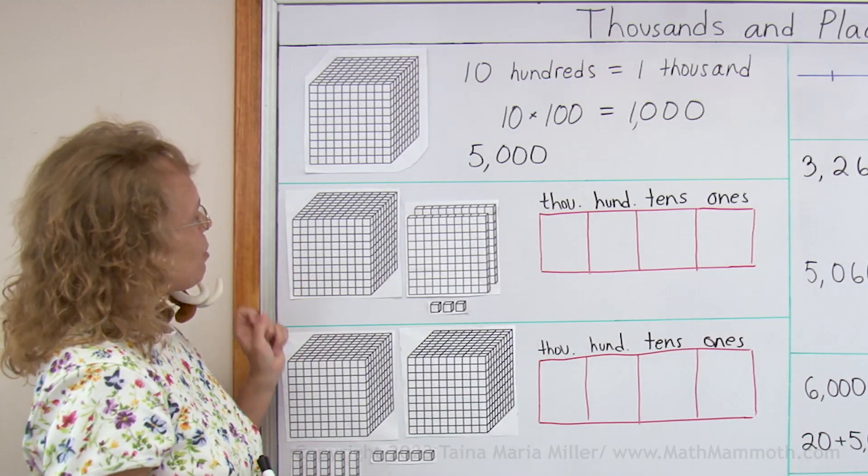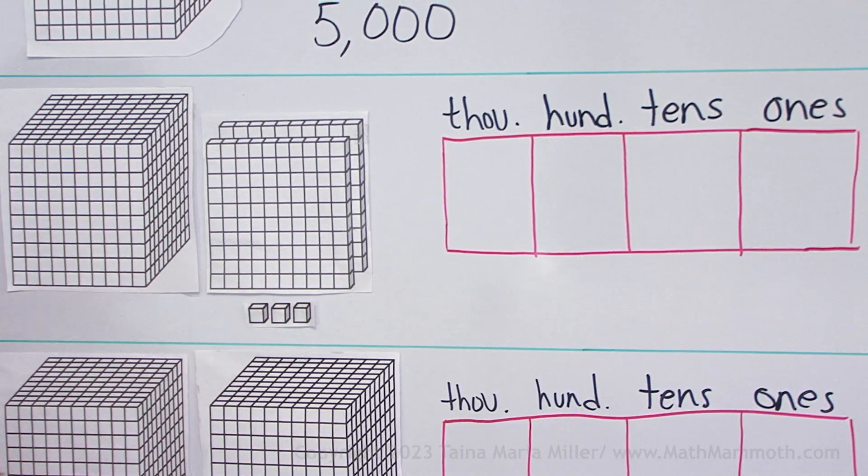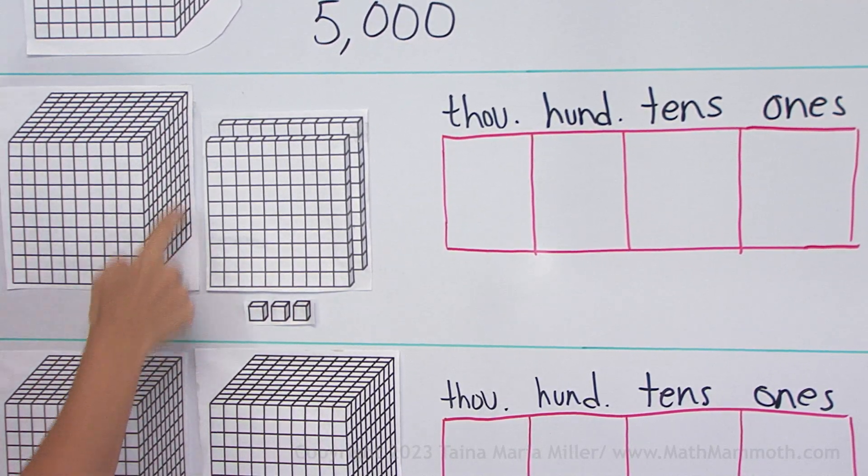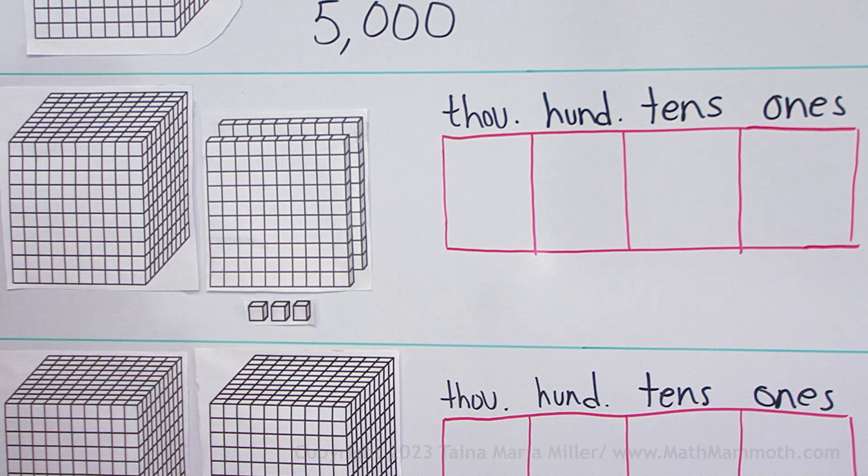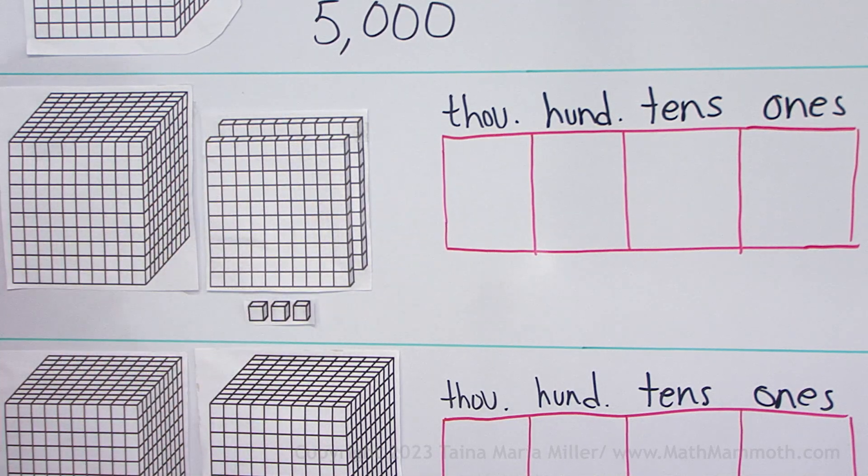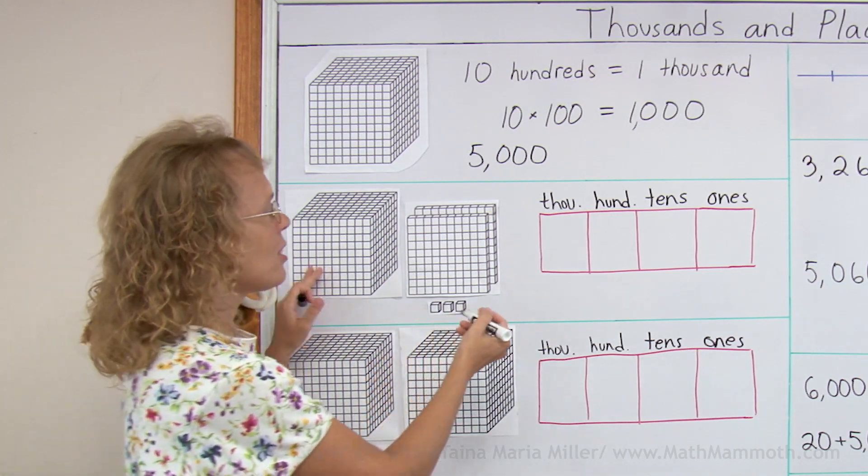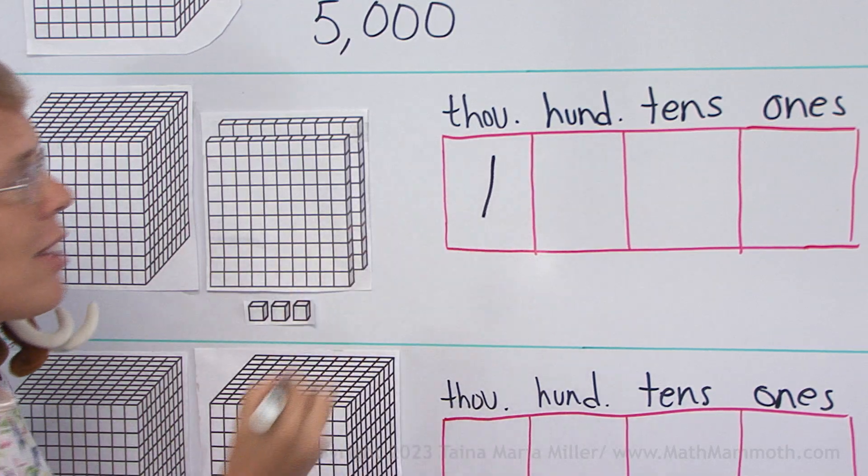Now let's look at this one. What number is here? How many little cubes? You can see one thousand here, right? Then over here is a hundred and behind it another hundred, so two hundred, right? And then three more. When we write this as a number, I will check the thousands, there's one of them and I put that in the thousands place.